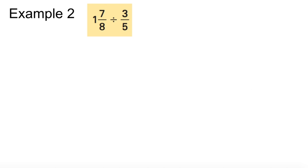One more example here. One and seven eighths divided by three fifths. First of all, one and seven eighths won't work. So, you've got to make this into an improper fraction. So, one times eight is eight plus seven is fifteen over eight. And now, divided by three fifths.